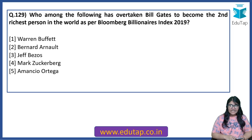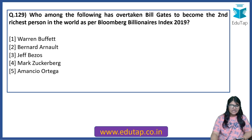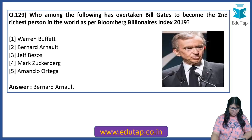Who among the following has overtaken Bill Gates to become the second richest person in the world as per Bloomberg Billionaires Index 2019? The names we tend to see are most familiar, but it is a little unfamiliar here. The answer is Bernard Arnault. He has overtaken Bill Gates to become the second richest person in the world.